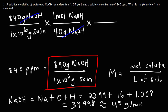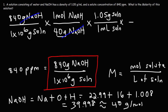Now we need to use the density of the solution to convert from grams of solution to a unit of volume. The density is 1.05 grams per milliliter, meaning 1.05 grams of solution equates to a volume of one milliliter of solution. We can now cross out grams of solution.